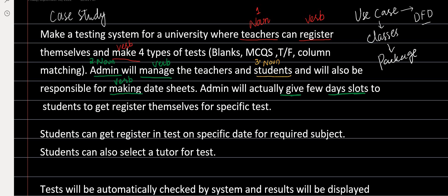Students can get registered for specific tests — so 'getting registered' is the verb related to the student, and I'm using yellow color for that. Students can get registered for a test on a specific date — the admin tells about the certain dates and the student picks from those dates. For the required subject, the student can select a subject. Students can also select a tutor for the test. So the 'select' process is used for subject, for date, and for teacher — a student is going to select a lot of things.